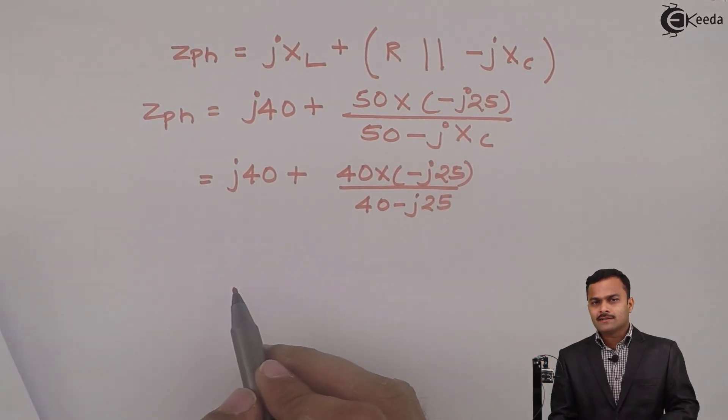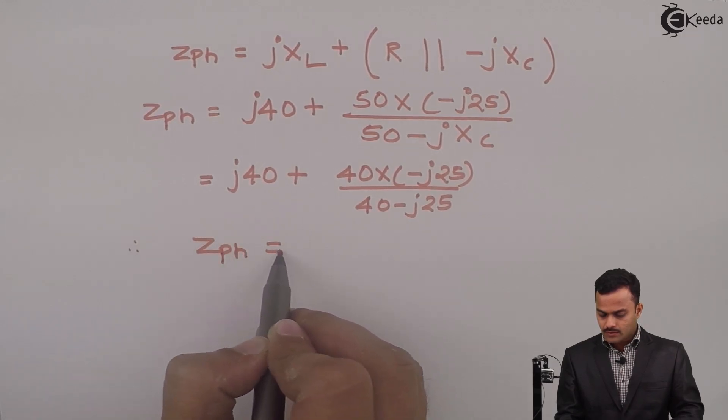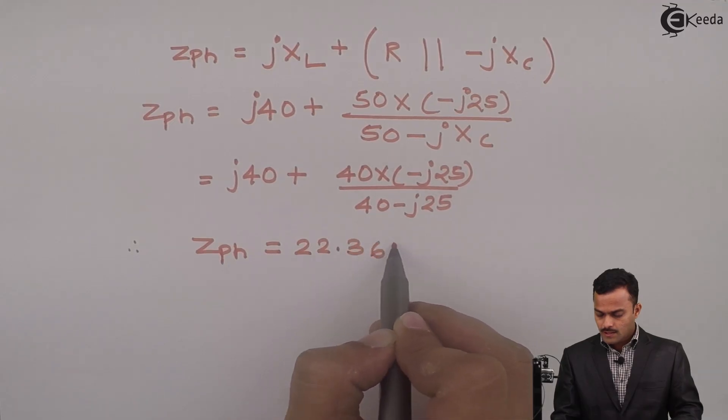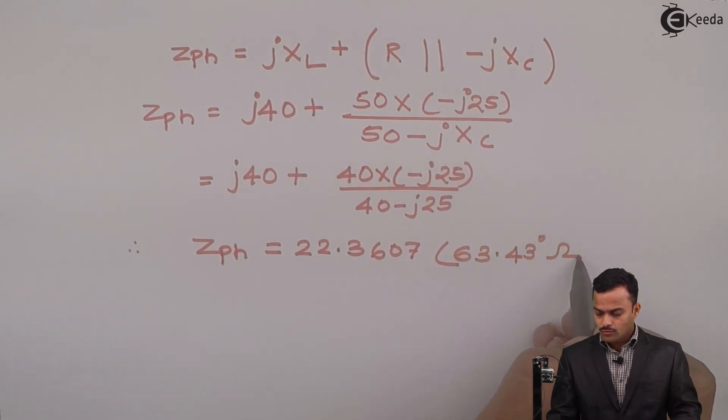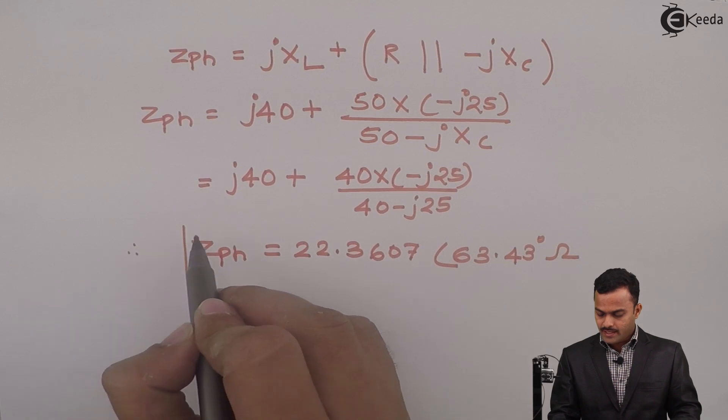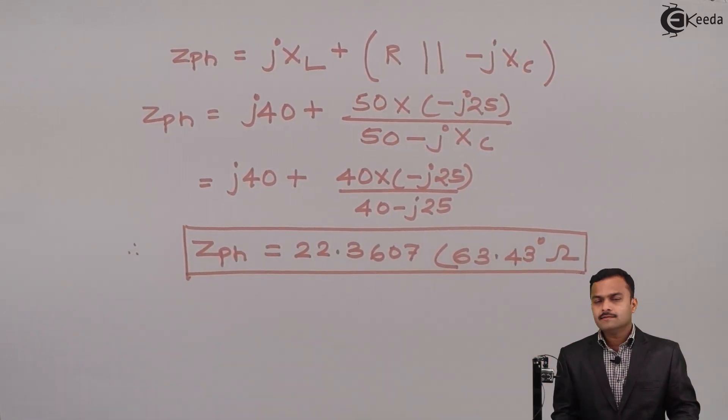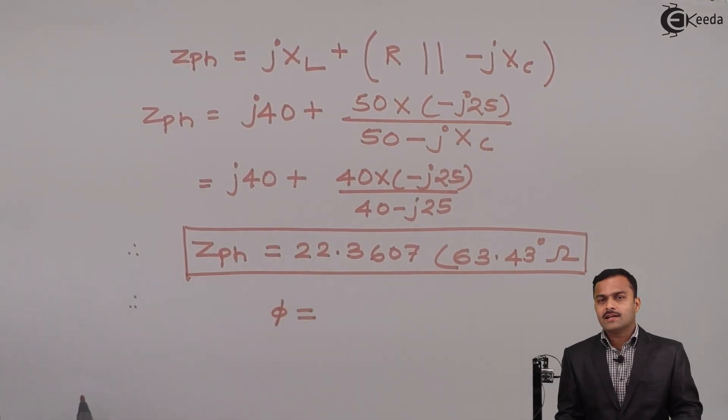If you solve this using the calculator in complex mode you will get ZPH equal to 22.3607 at an angle 63.43 degree ohm. So this is ZPH and angle of ZPH will be power factor angle phi.